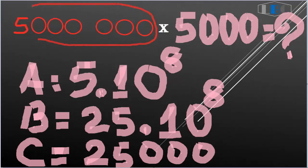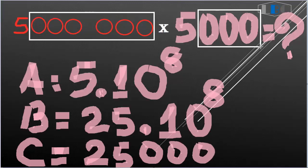You can see all the zeros. The first number, five million, has six zeros from here. And five thousand has three zeros from here. You can know that when all the zeros are counted...